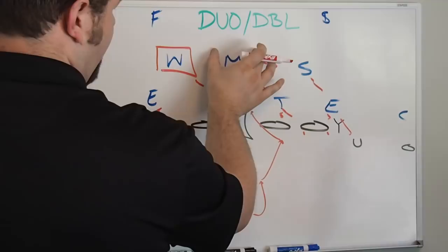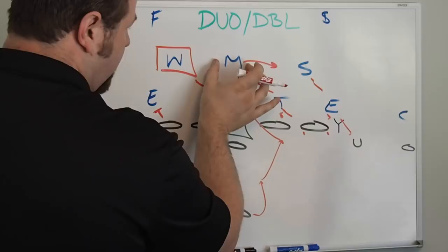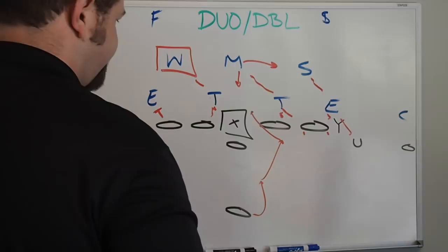On zone play, D lineman up to Mike or up to any linebacker really. On duo, it is the Mike linebacker is the read because he assumes with two double teams they're strong, he can pick whatever hole he wants to run to.